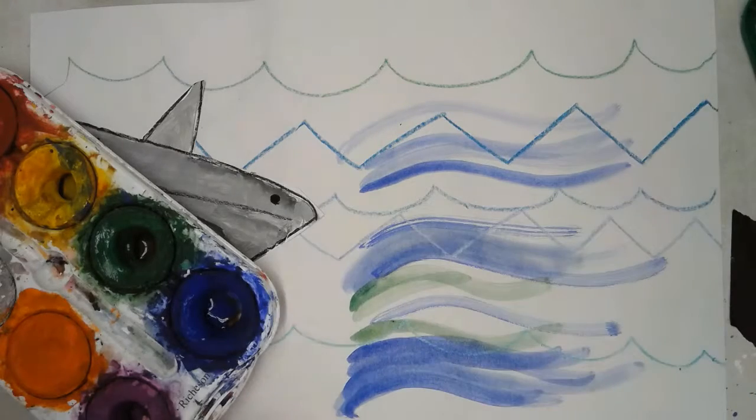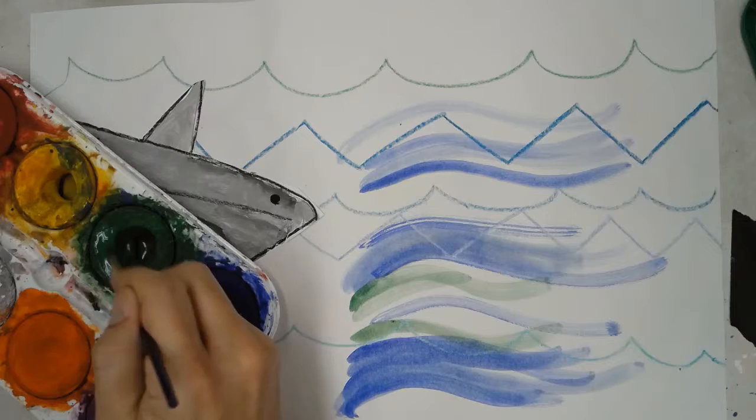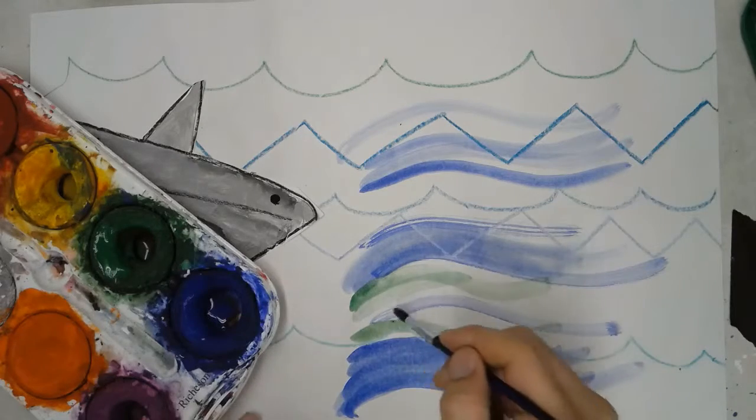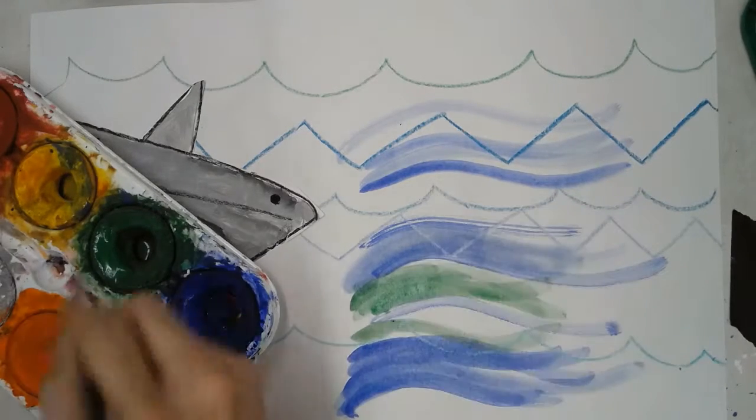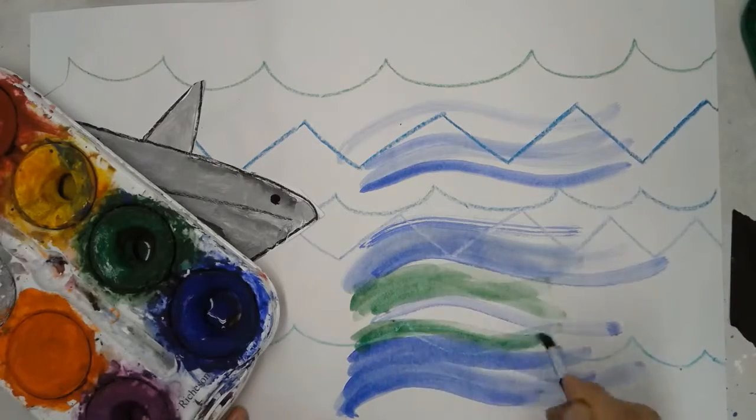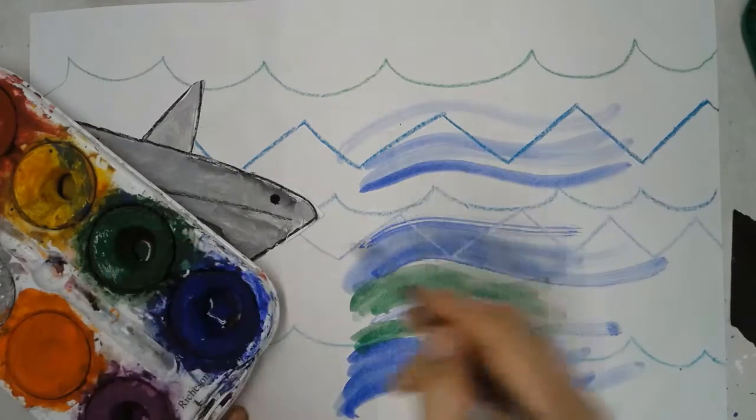My brush is super dry, so I'm going to want to get it a little bit more wet. Get that tempera cake nice and wet so that paint will spread out easily. As I'm going, the blue and the green will start to mix and make more of an aqua color.